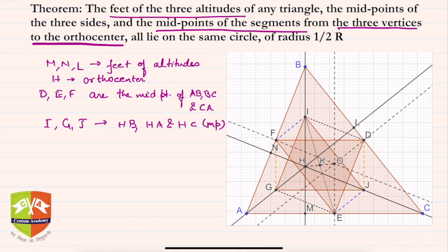We have to prove that all these points — M, N, L, D, E, F, I, G, J — all lie on the same circle, which is called the nine-point circle. The diagram looks a little intimidating, but we'll try to simplify it as much as possible. We'll be using the midpoint theorem a lot. Let's highlight one particular shape — a rectangle — and we'll also show why it is a rectangle. I'm highlighting this one.